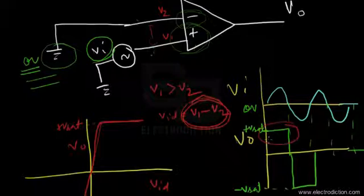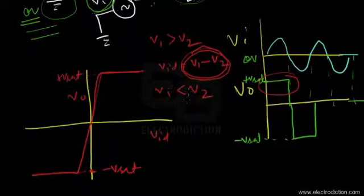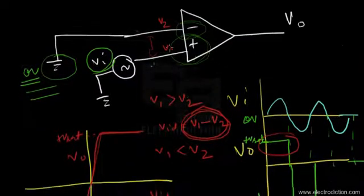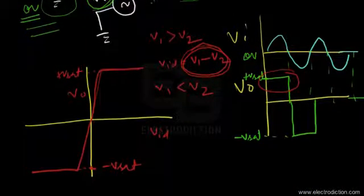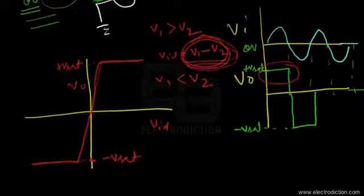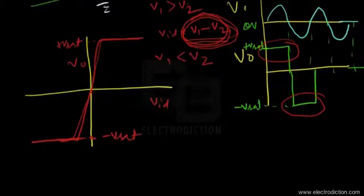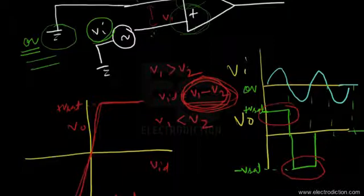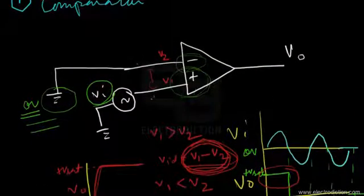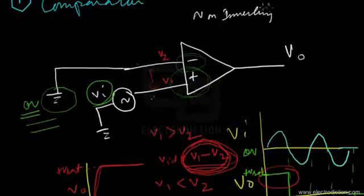On the other hand, whenever V1 is less than V2, the voltage applied at the inverting input terminal is greater than that of the non-inverting input. The term V1 minus V2 becomes negative, and when that happens, the op-amp output quickly swings to the negative saturation voltage level. From this characteristic we get the operation of the comparator. When we apply the time-varying input signal to the non-inverting input of the op-amp, this configuration is known as a non-inverting comparator.